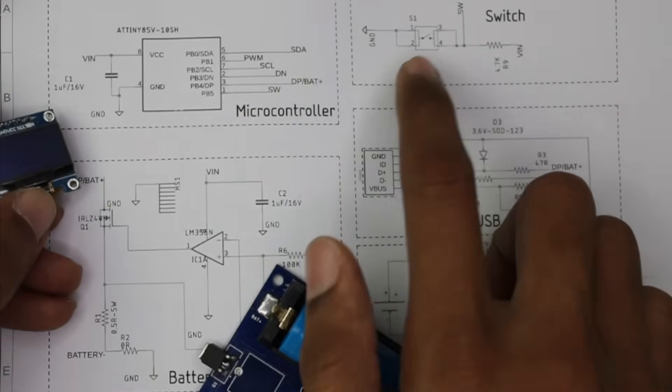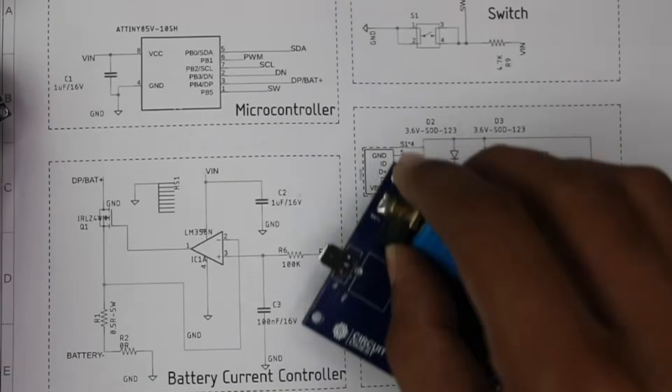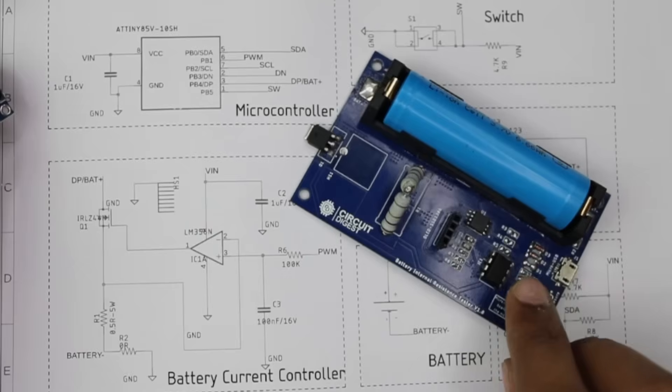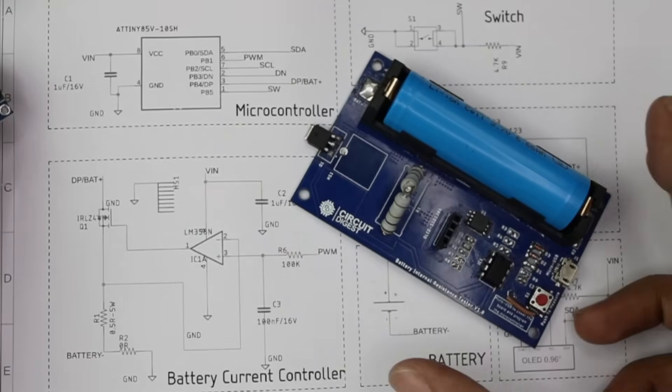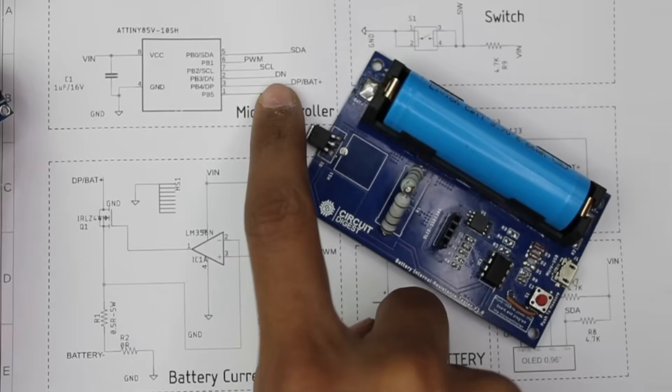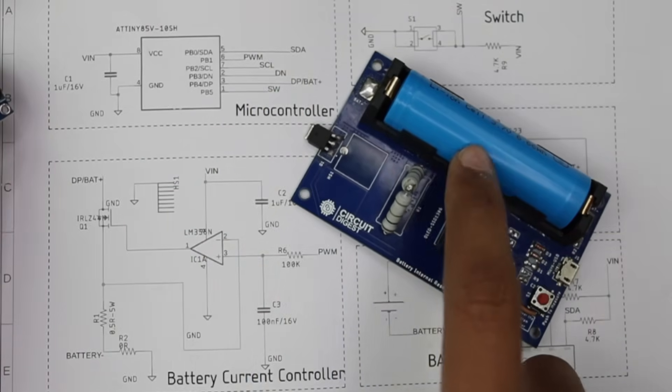We have a button to reset the entire thing connected to PB5 through this SW label. Then we have an op-amp and MOSFET, this is the MOSFET we're using and this is the op-amp. It generates a PWM pin from the ATtiny85 to control this MOSFET and connect it to this particular load.